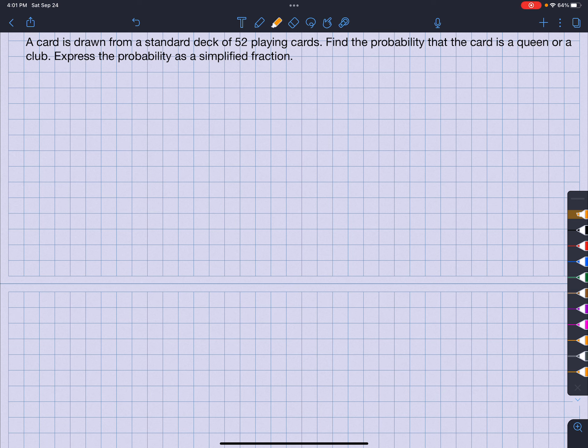So again, keyword here is or. So I want to find the probability of a queen or a club. Okay. So that means it's going to be the probability of being a queen plus the probability of being clubs minus the probability of getting queen of clubs, right?